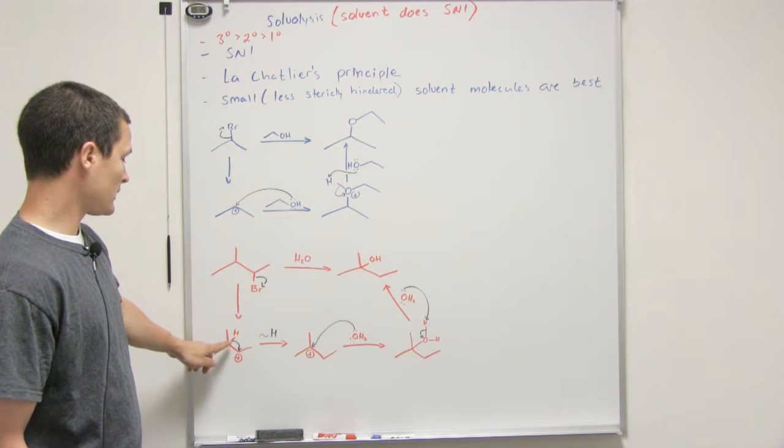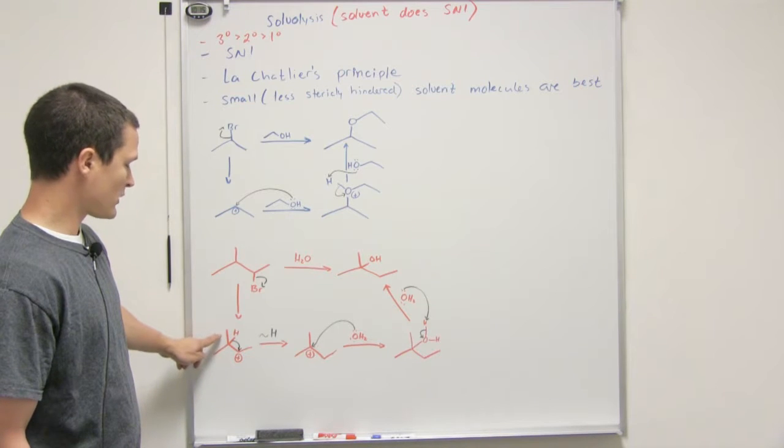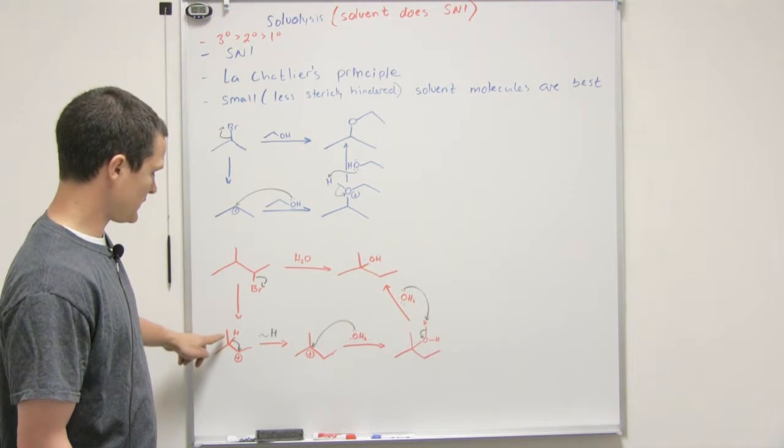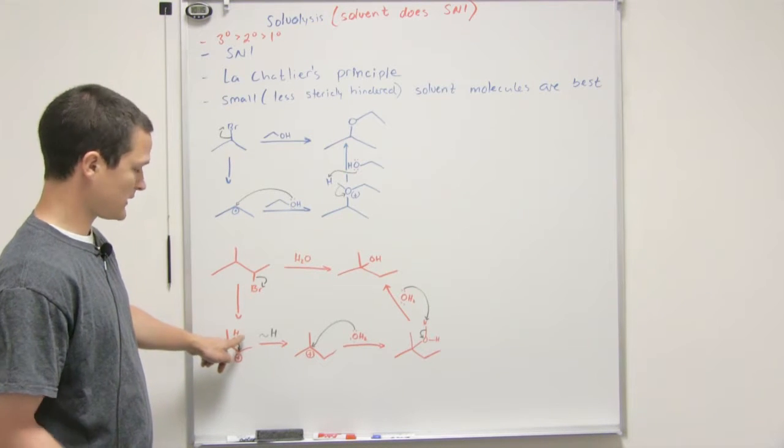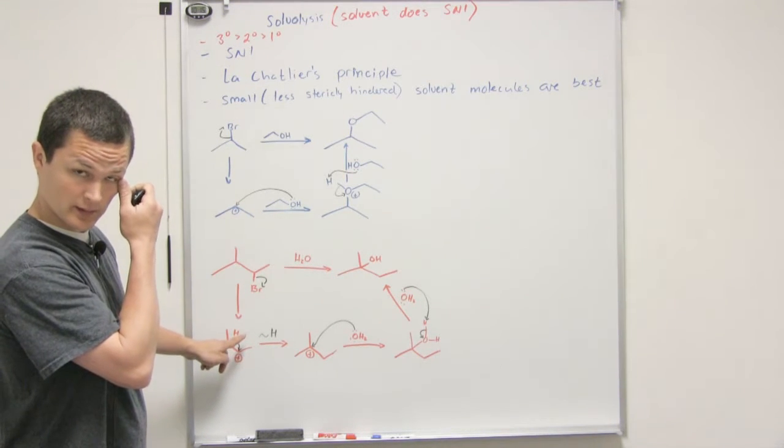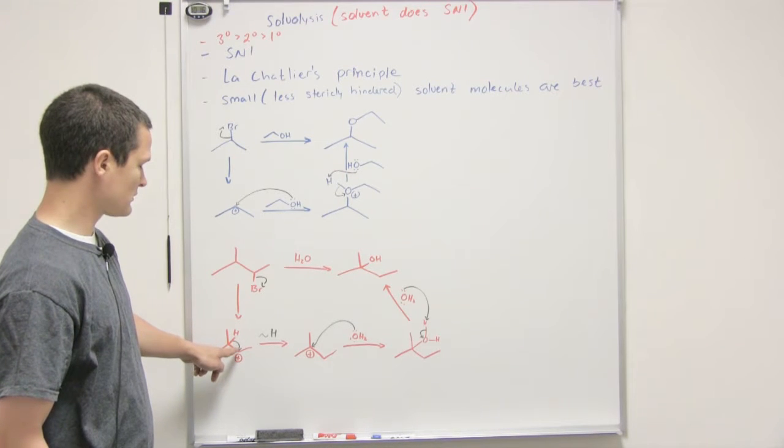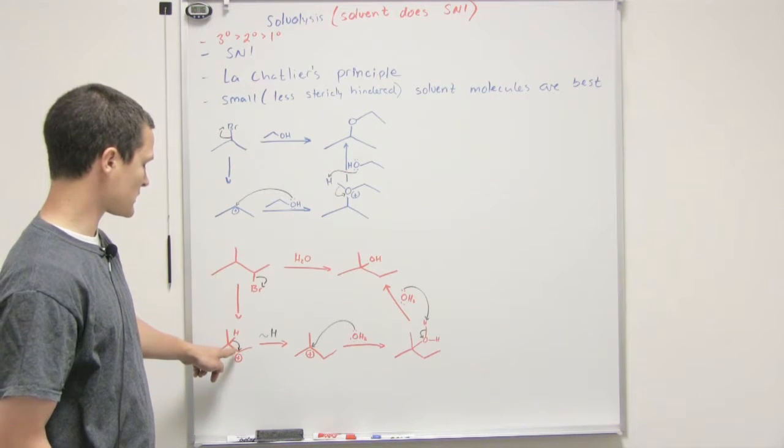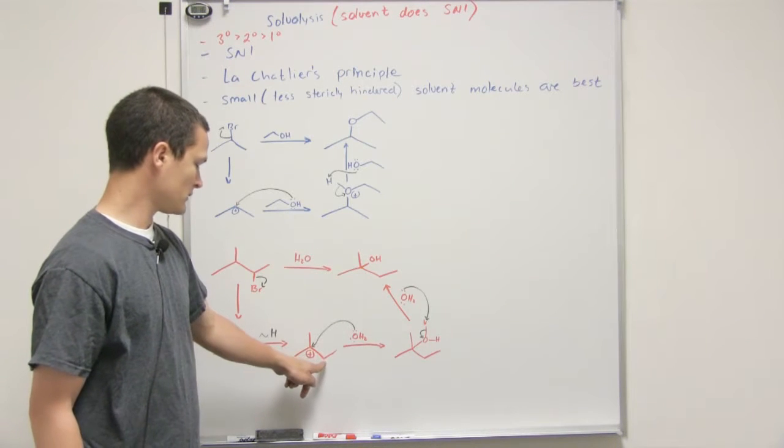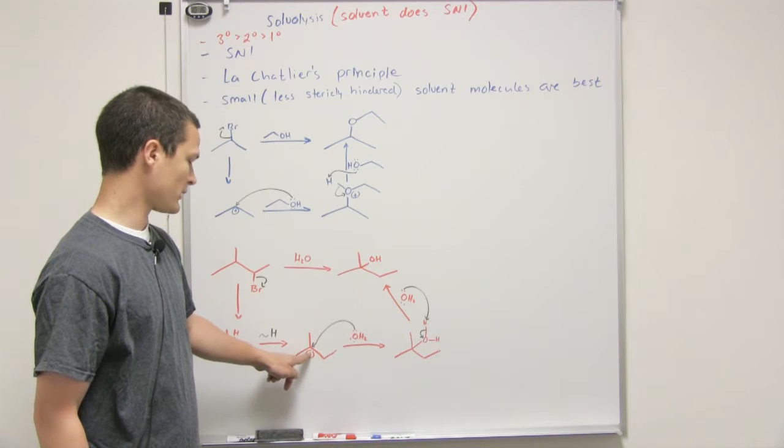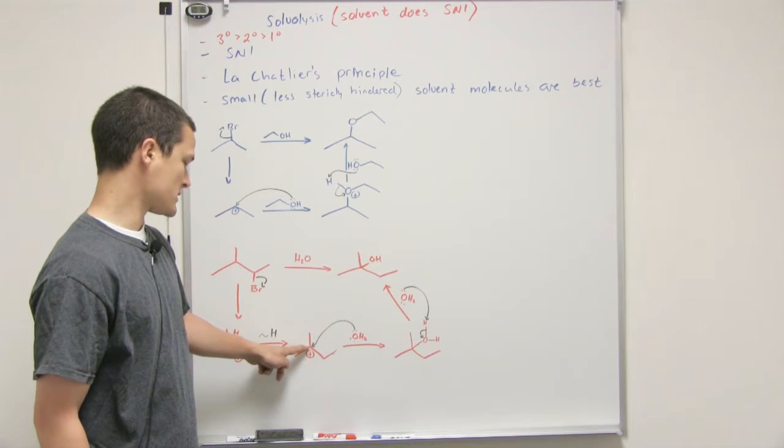If you remember which one moves faster, the methyl group or the hydrogen, you'll recall that the hydrogen moves a lot faster so it hops over to the carbocation and basically moves the carbocation to the tertiary position.